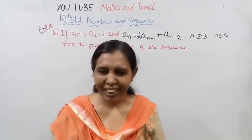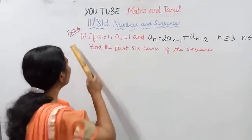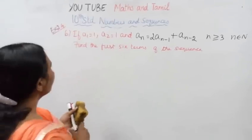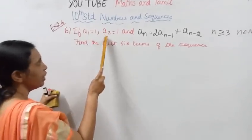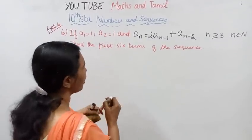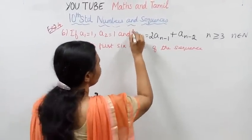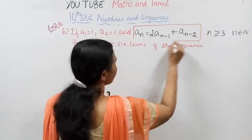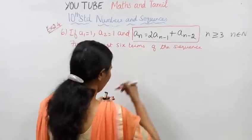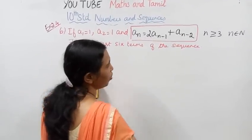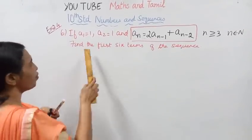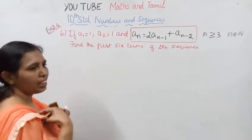Hello students, welcome to Max and Tomlin channel. Now 2.4 is on the part. A1 equal to 1, A2 equal to 1, and An equal to 2·A(n-1) plus A(n-2), where n is greater than or equal to 3, n belongs to natural numbers. Find the first 6 terms of the sequence.